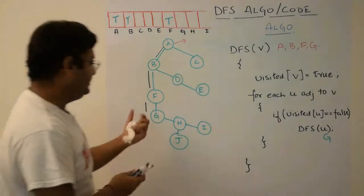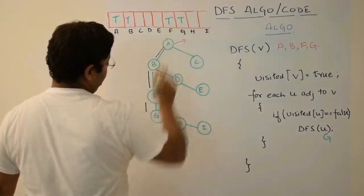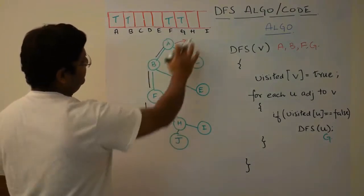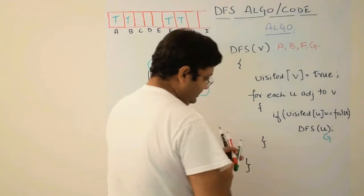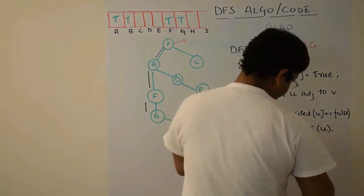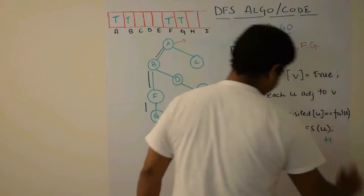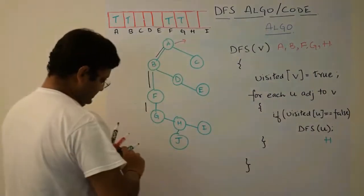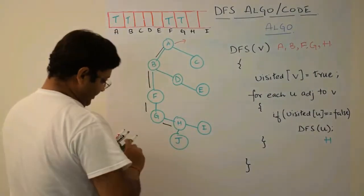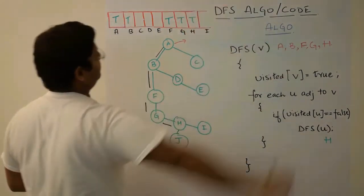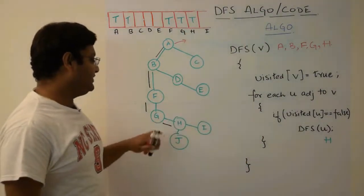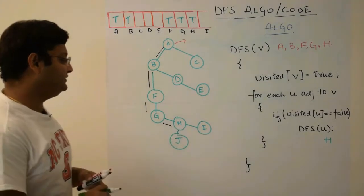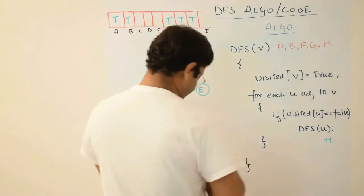Again the same logic. G will be marked true and neighbours of G will be checked. F is already visited. H is not visited. So you will again pass H onto DFS recursively. Again we have gone H. H is here. We have moved to H. Now again, H will be marked as visited, true. And neighbours of H will be checked. So it will be G. Definitely. We will neglect it. I and J. Both I and J are not visited. So we can choose any one of them. Suppose we have chosen I. So now I will be passed.